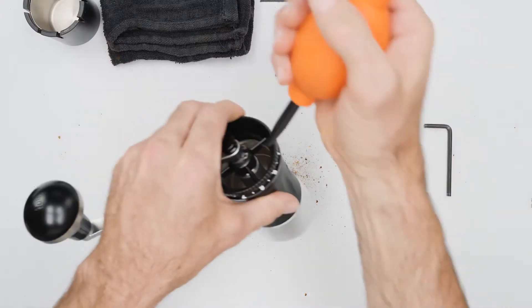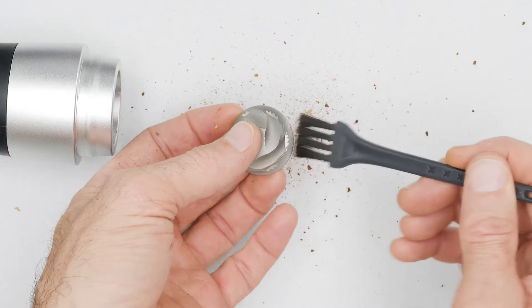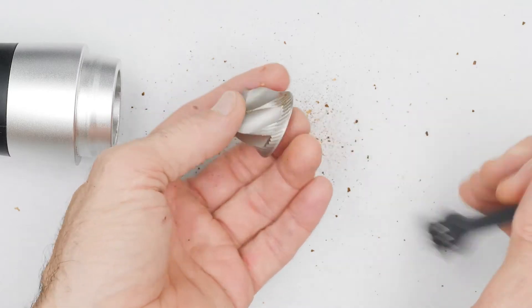A dust blower tool for cameras can help remove powder from the hard-to-reach areas, but the included brush is generally all you'll ever need. Never flush with water.